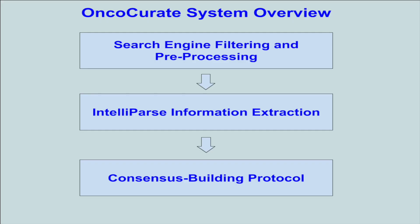OncoCurate has a unique three-module design that maximizes efficiency and accuracy. It uses a search engine algorithm to obtain recently published scientific papers, then parses through this data to collect and summarize information about possible novel mutations. Human curators can even rate and correct the system's final results. Ultimately, by linking basic science with clinical applicability, OncoCurate promises to transform the way doctors use mutations to impact cancer treatment.